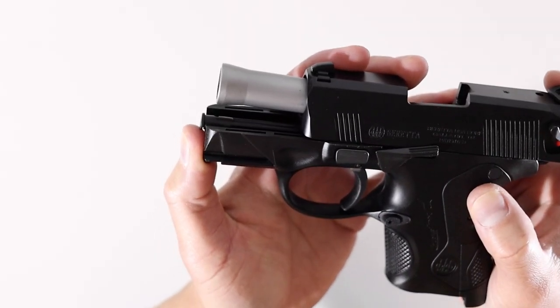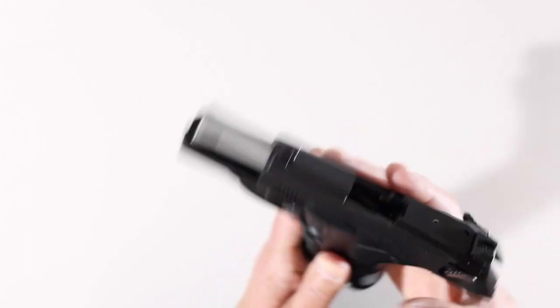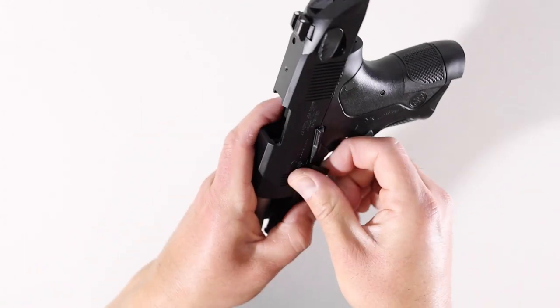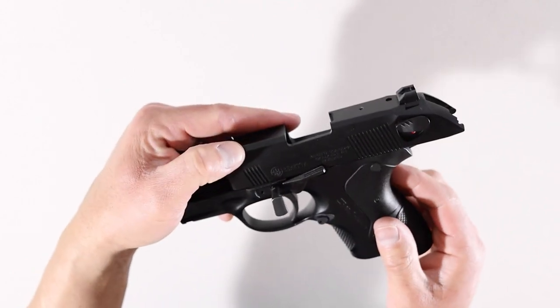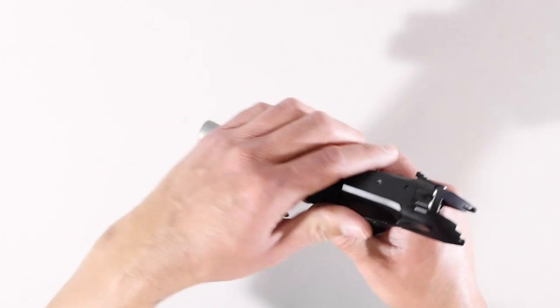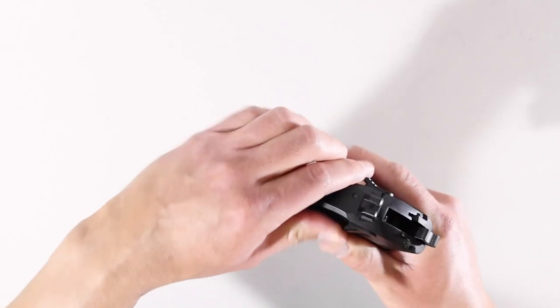Now look for the takedown lever. It's going to be right on top of the trigger guard and right in front of the slide stop lever. Rotate it downward to the 6 o'clock position. Pull the lever out—you can pull it totally out if you want to, or you can leave it inside the frame. I'm going to leave it in the frame for now, but I'll probably remove it later just to make sure it's totally clean. Now press the slide stop lever downward, and remove the slide from the frame.